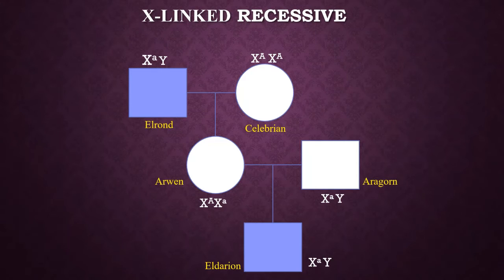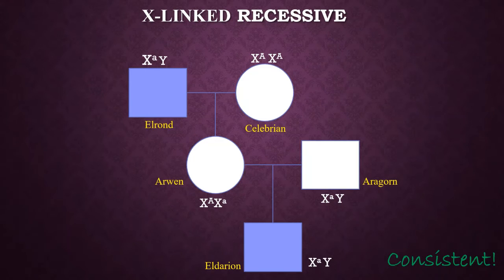Next, we have the X-linked recessive mode of inheritance. This proves to be a consistent mode of inheritance, since all genotypes correlate with each individual's trait.